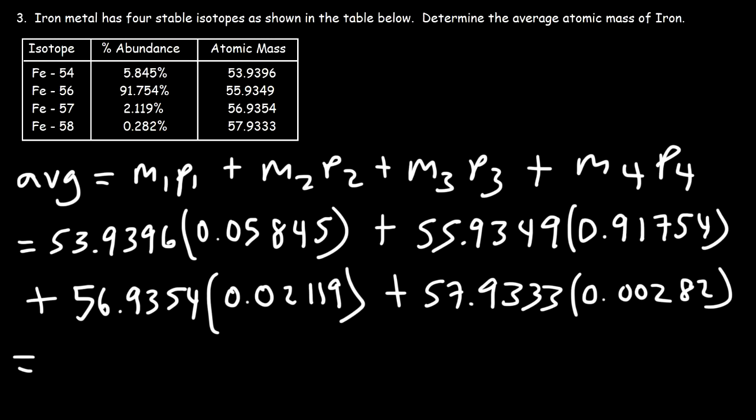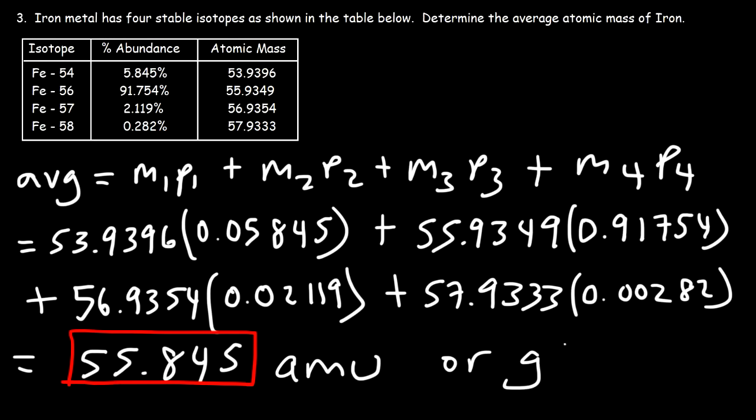This might take me a while, so just bear with me for one moment. Just be careful not to mistype a number, because if you make a little mistake here, that changes the entire problem. So the answer that I got is 55.845. So that is the average atomic mass for iron metal in atomic mass units, which is equivalent to grams per mole.